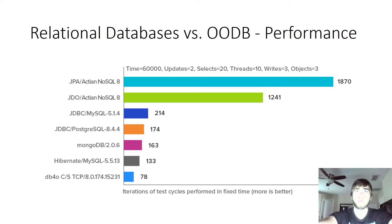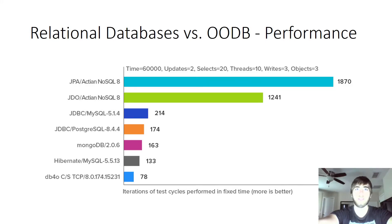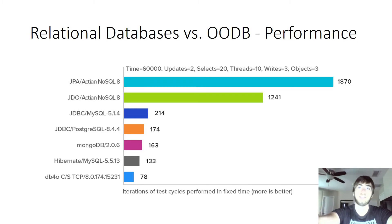So what is the performance comparison between relational and OODBs? It is demonstrated in this chart using a test case of common functionality both relational and OODBs have to perform on a frequent basis. Specifically, if we perform two updates, 20 selects, and three writes with 10 threads launched on three objects, how many iterations of this case can be performed in 60 seconds? The clear winner here is NoSQL, taking both the top two spots.